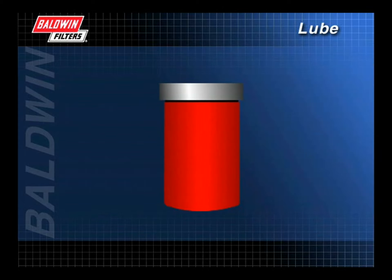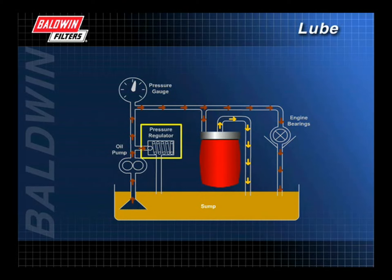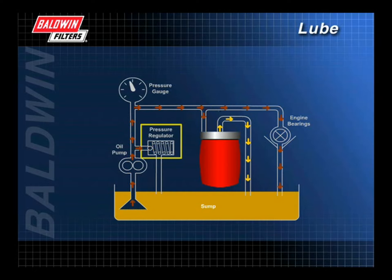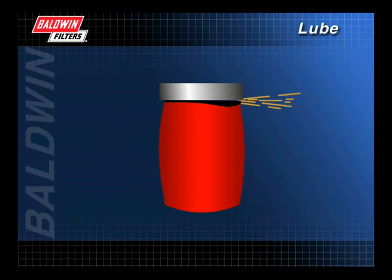Deformed filters are the direct result of excessive lubricating system pressure, which is caused by a stuck or malfunctioning pressure regulator valve in the oil pump assembly. This problem should not be attributed to the filter. Gaskets are displaced from filters due to excessive lubricating system pressure, insufficient gasket compression, or a combination of both.